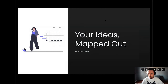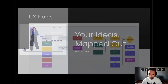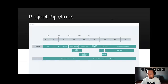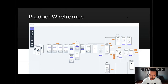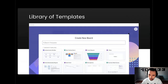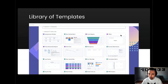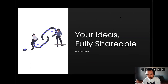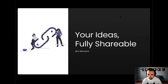Whimsical comes with a whole lot of different tools to get your ideas mapped out. We use it for UX flows, project pipelines, and product wireframing, which is what we'll talk about today. There's a whole library of templates inside Whimsical that you can tackle all of your ideas with. Once you're done, you'll have a fully shareable board, or you can share individual slides or pieces — use those in presentations, send them to developers and designers, or whatever you'd like.